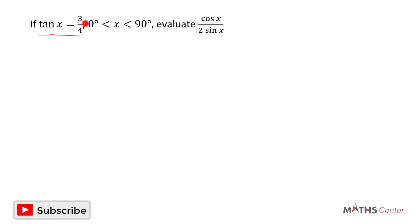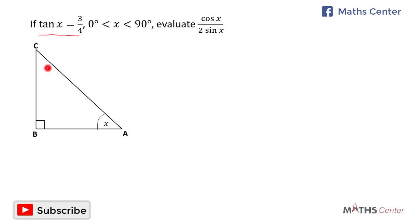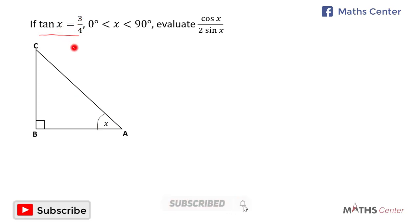We have tan x equal to 3 divided by 4. If we draw a right angle triangle ABC and choose an interior angle as x, tan is opposite divided by adjacent. So tan x equals the opposite which is 3 divided by the adjacent which is 4. The opposite to x is 3 and the adjacent to x is 4.